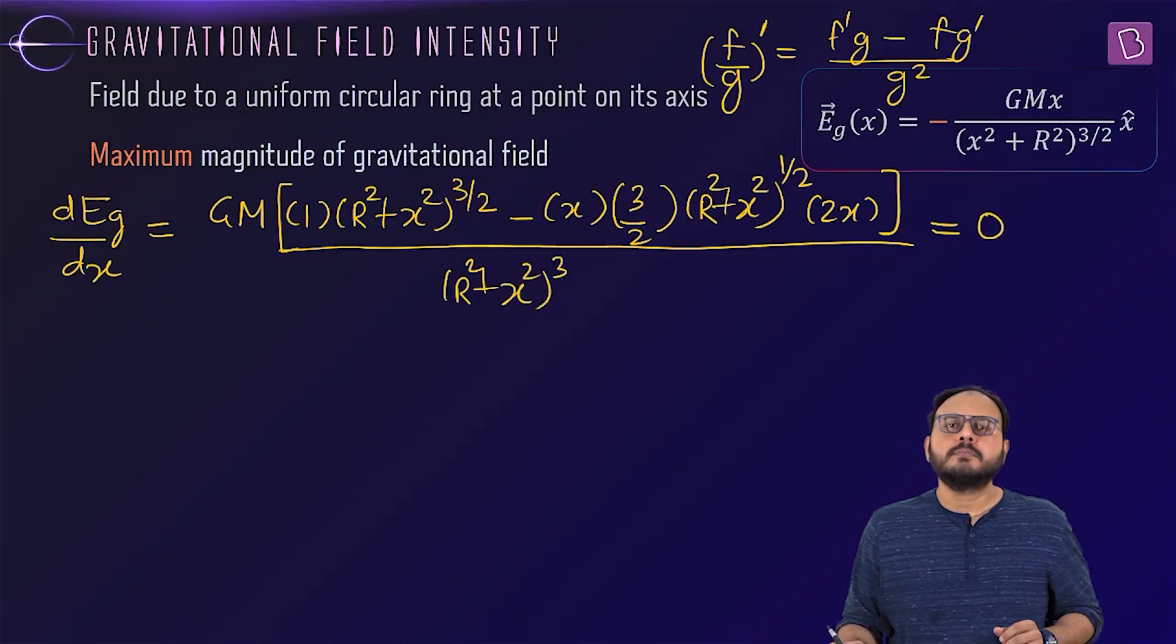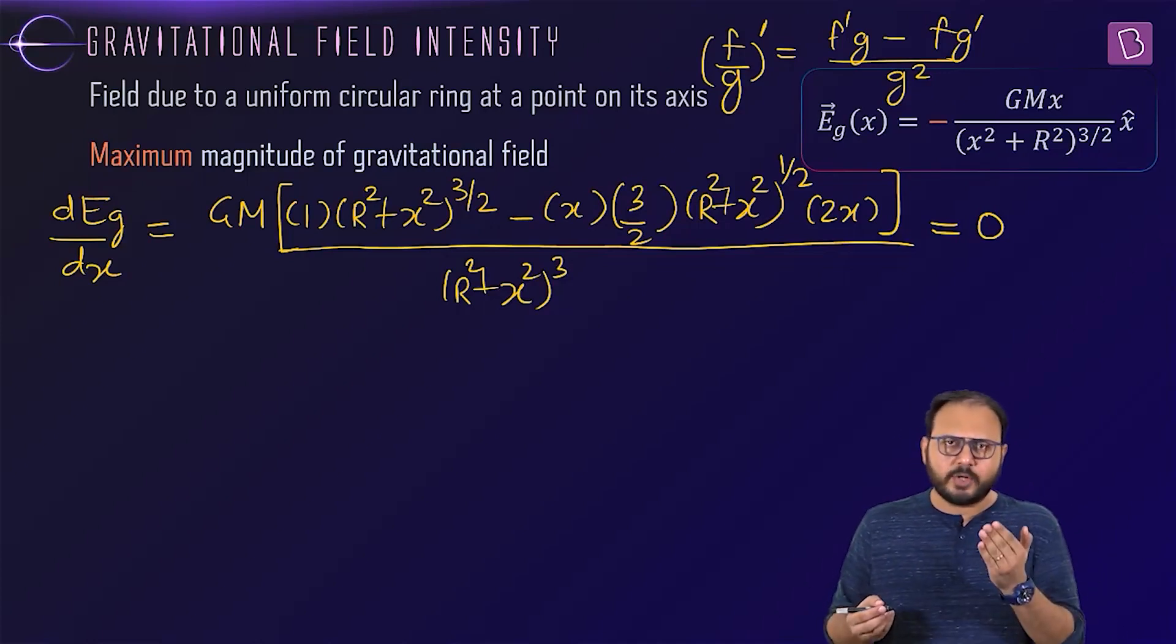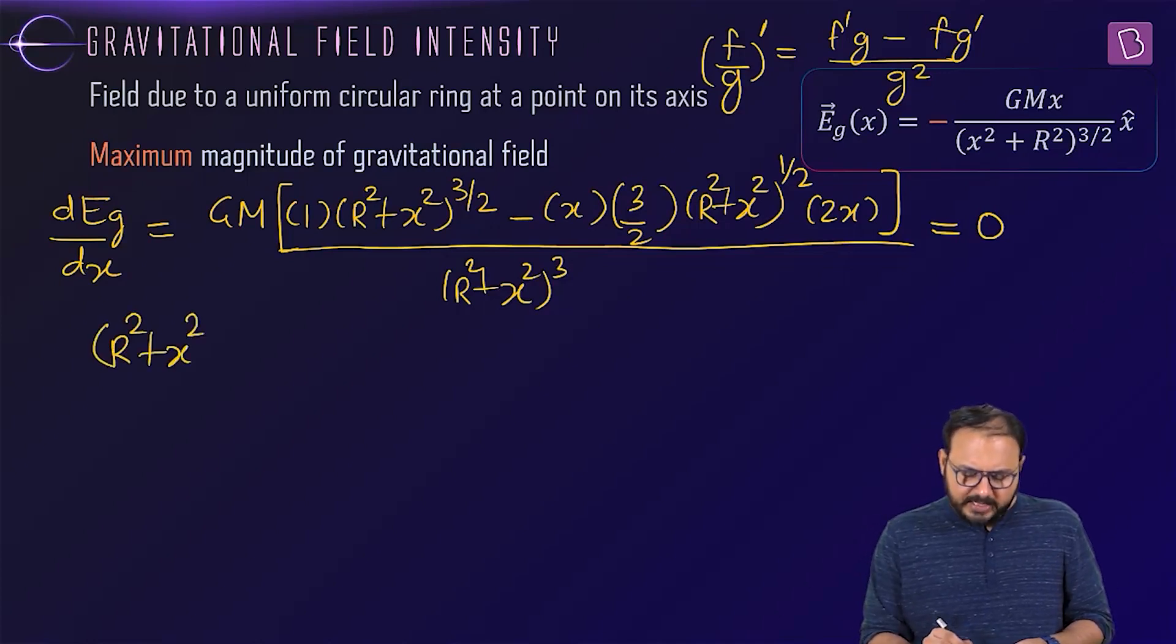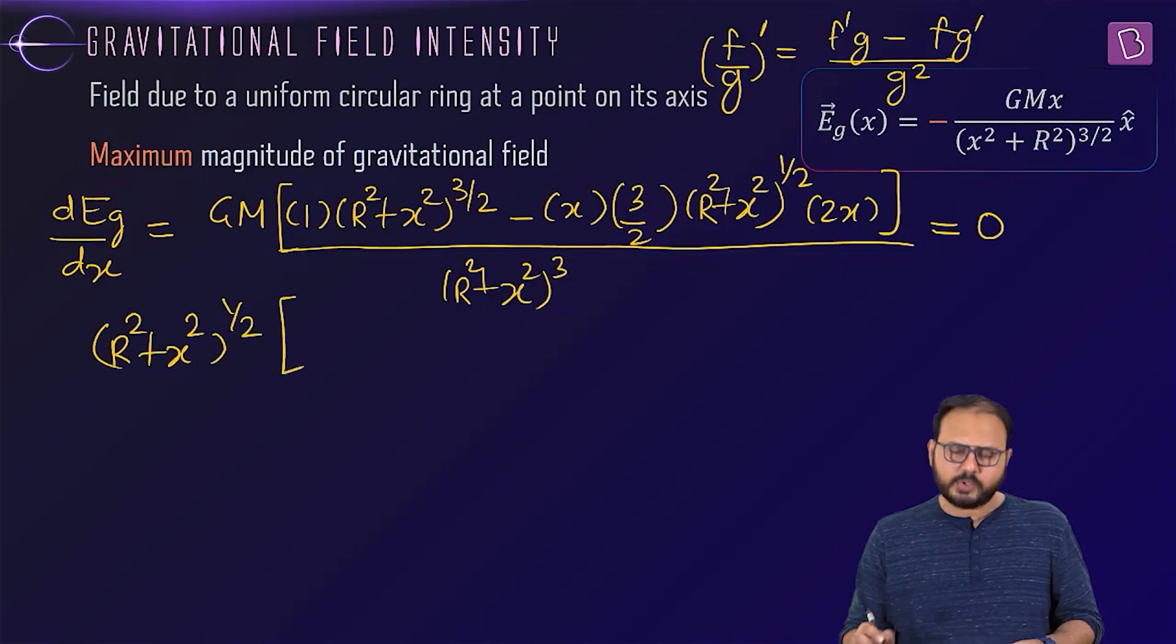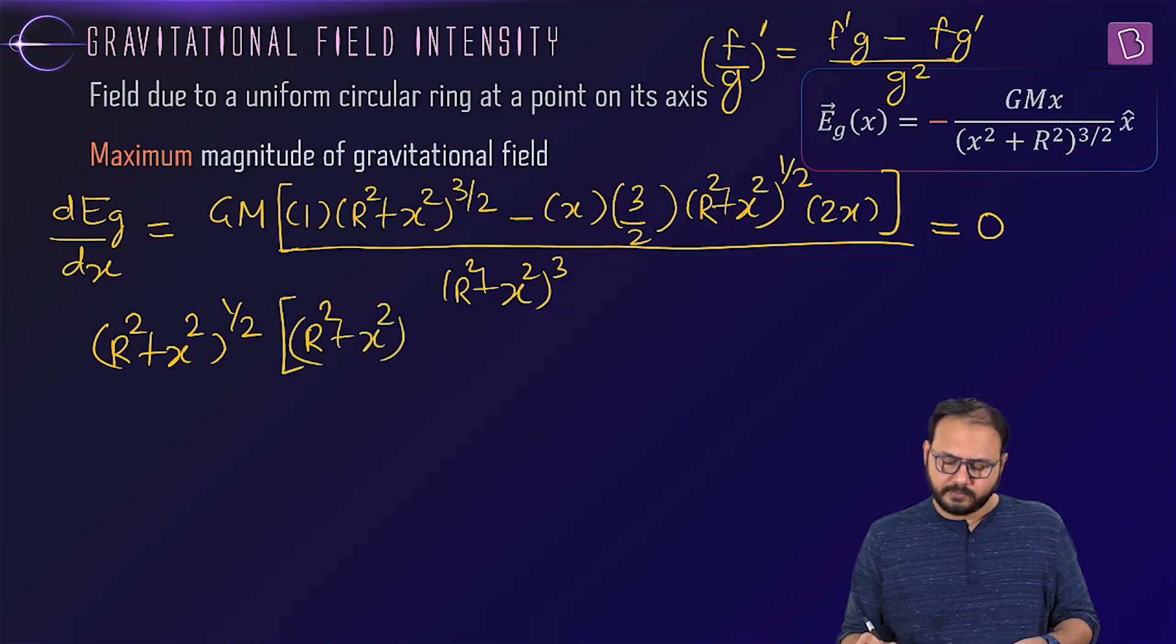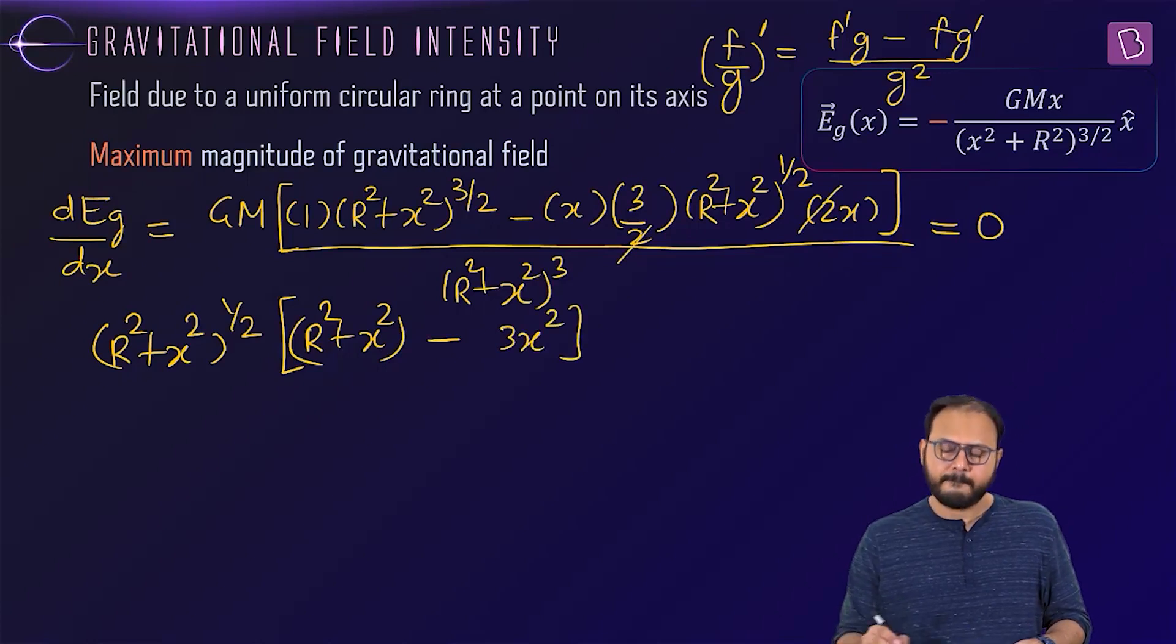Okay? Yes or no? Yes? Good. Now the denominator is gone. Cross multiply. Since it's not equal to 0, I can cross multiply and make it vanish. Right. Now r square plus x square 3 by 2. r square plus x square 3 by 2. Take r square plus x square raise to half common. So what's left inside? r square plus x square. 2 and 2 cancel minus 3x square equal to 0.